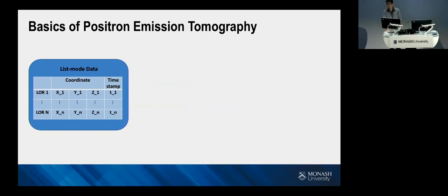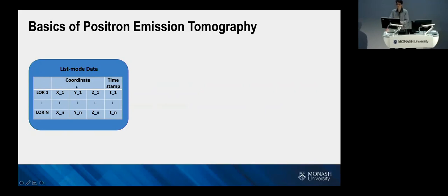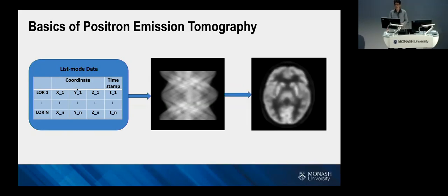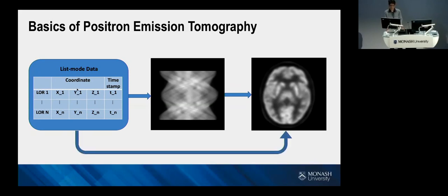Here is the list-mode data — called LISMO data — acquired from the PET scanner in most modern PET machines. For each line of response, the list-mode data can be considered as a time series. Each line of response has a unique timestamp, coordinate information for the detectors, energy information, and so on. We can convert this to traditional sinogram files and then generate the image, or alternatively reconstruct the image directly from the list-mode data.